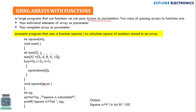It will calculate the square of 3, 4, 8, 9, and 10. First, let's define a function called square. This is the parameter the function can receive — it can receive an integer value. Now in the void main function, we have declared an array of type integer named num with a size of 5. We also need an index variable i for iterating through the for loop.